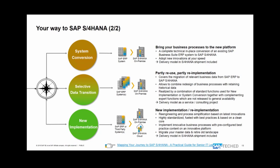Therefore, the delivery model for selective data transition is always via a consulting project or service engagement with SAP — it's not a ready-made out-of-the-box tool. At the bottom of the slide, I have a link to a white paper on SAP.com called 'Mapping Your Journey to SAP S/4HANA: A Practical Guide for Senior IT Leadership' — around 90 pages — which explains these different scenarios in detail.